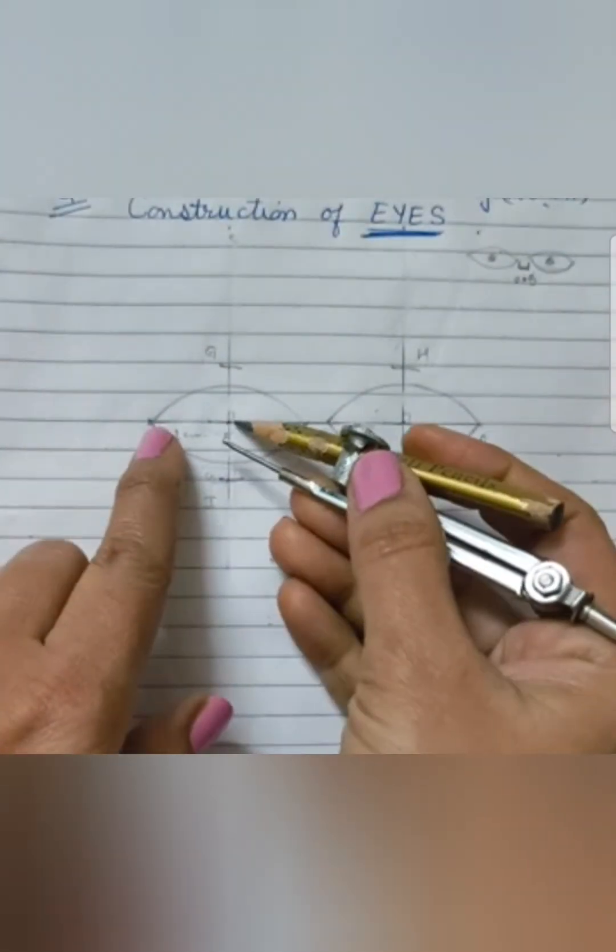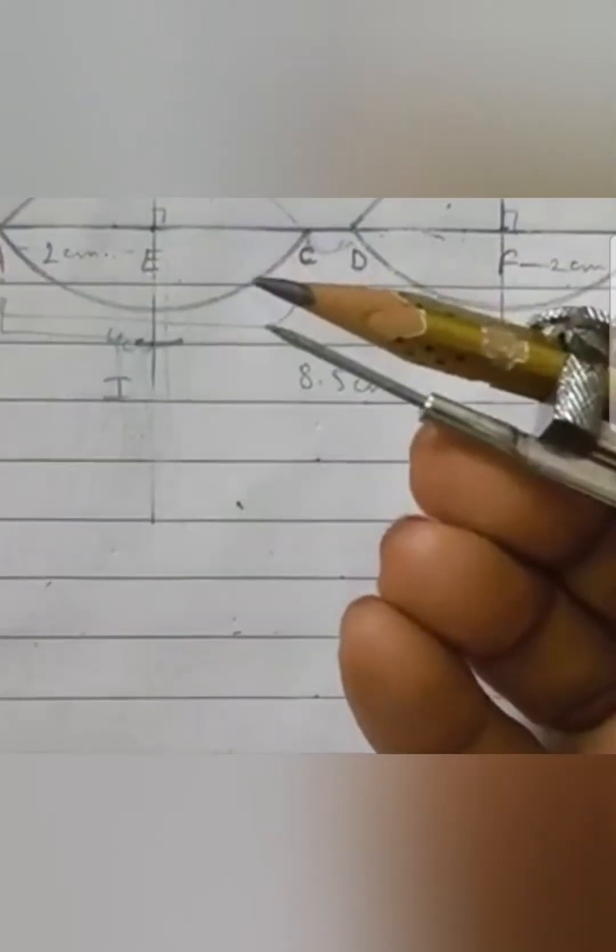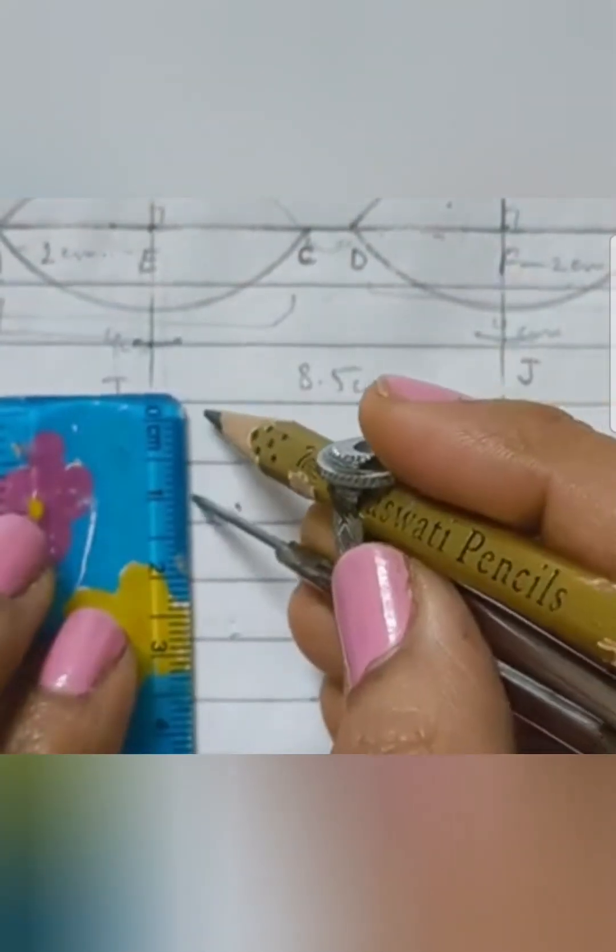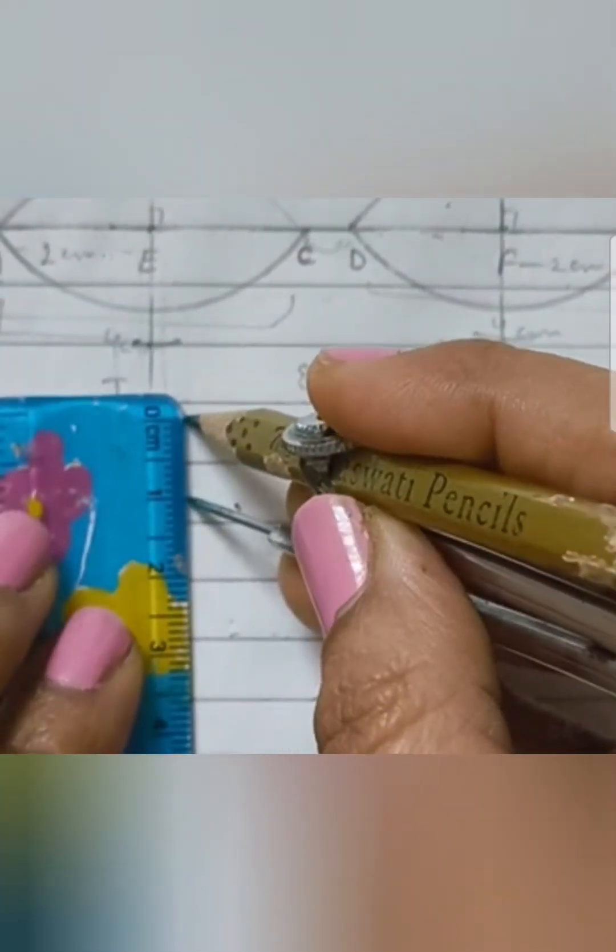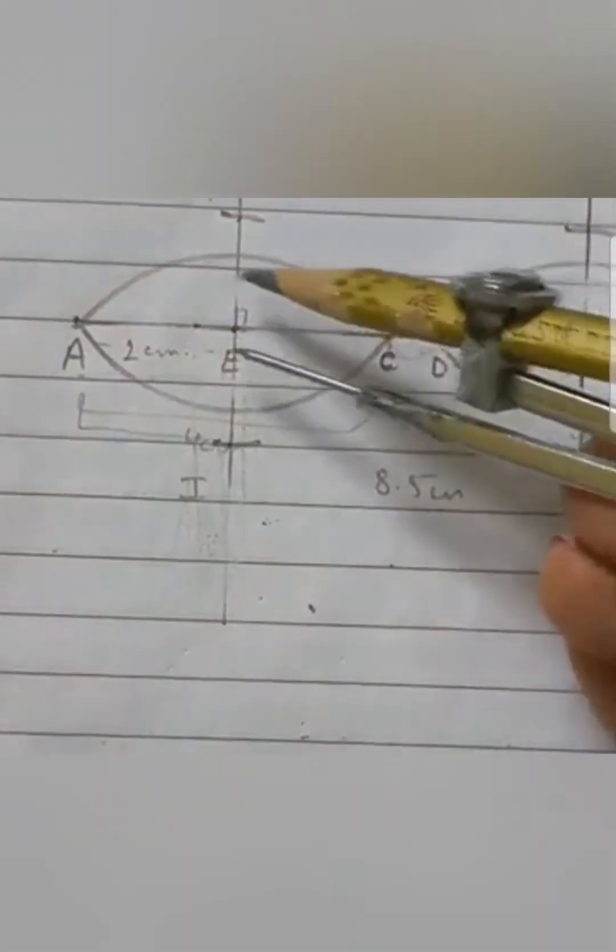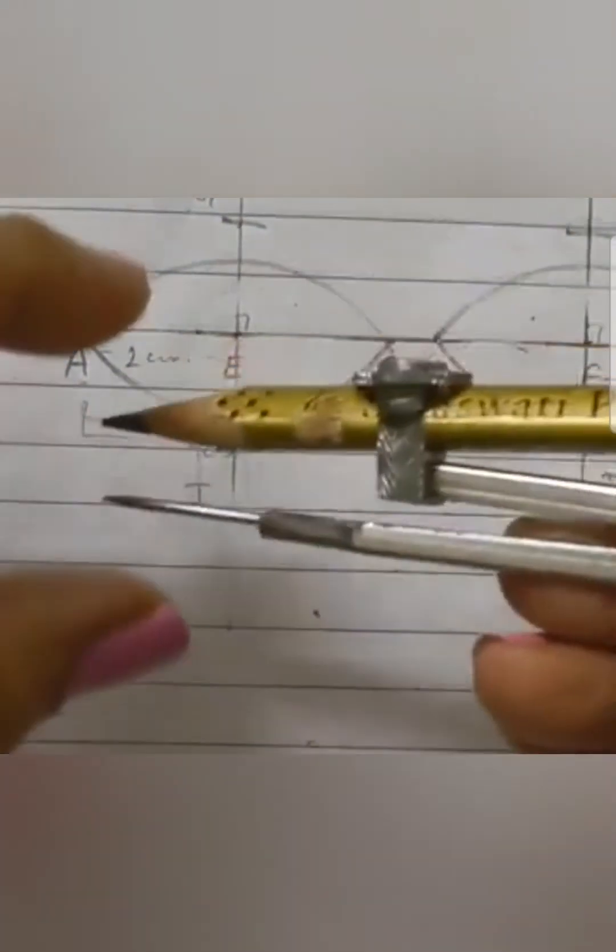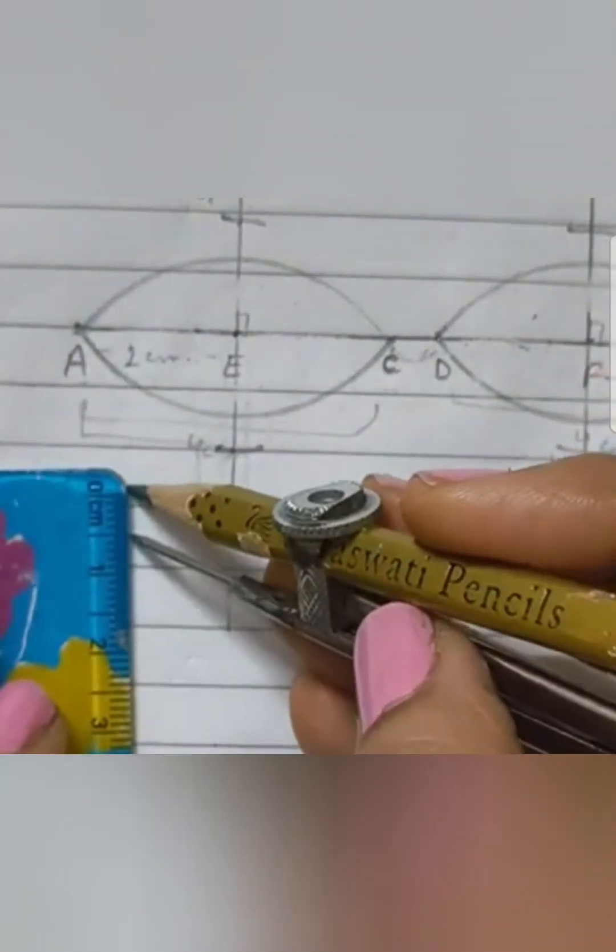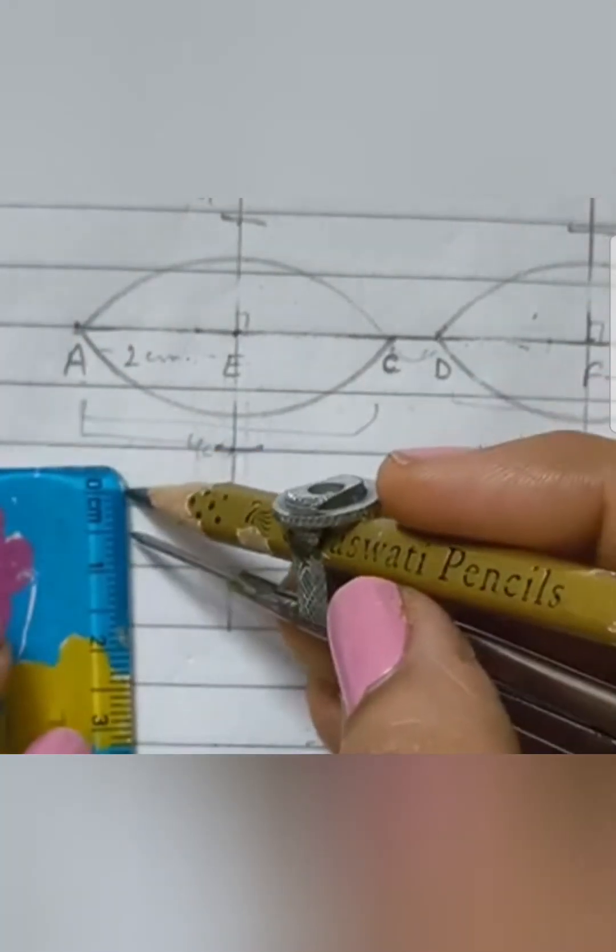Now let me say this once again. To get the curves above the line, keep the compass below the line segment on the perpendicular lines. And to do the curves below the line, keep the compass in the opposite direction.